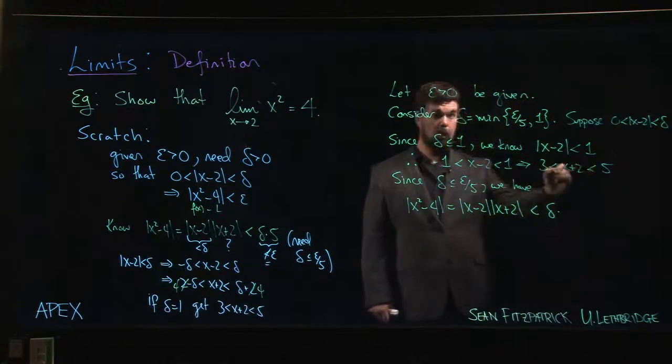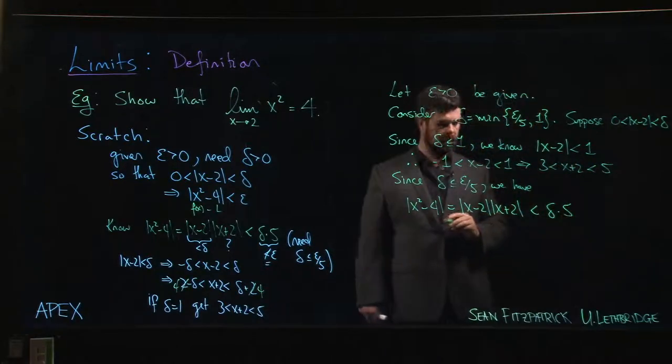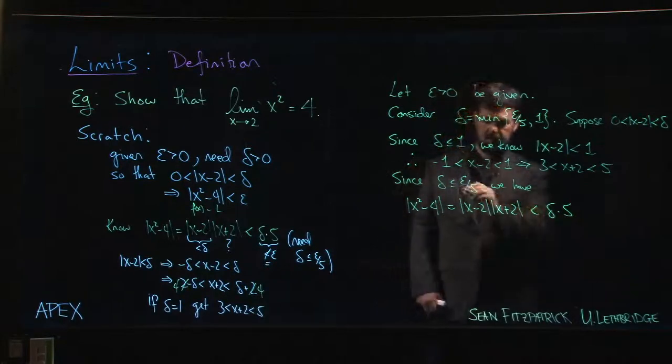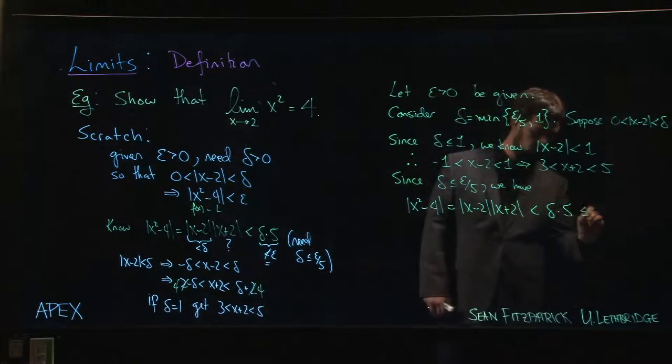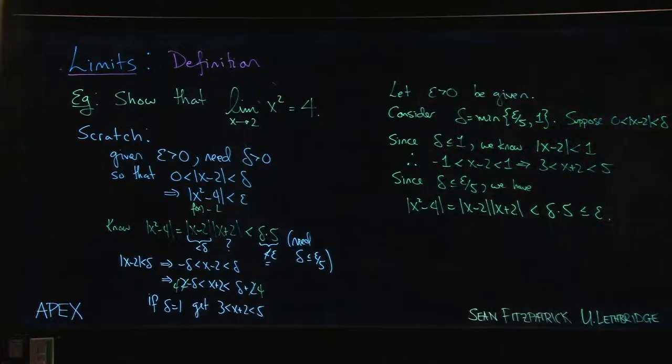x + 2 from what we did up here is less than 5. And 5 delta, well, 5 delta is less than or equal to epsilon, and that's what we needed to show.